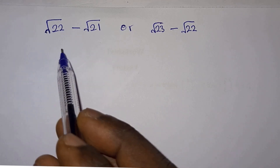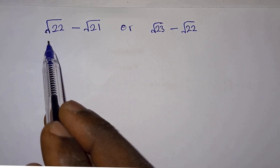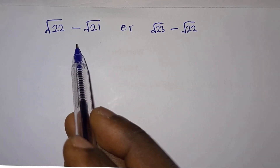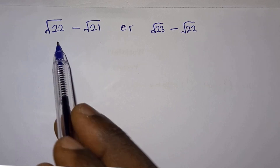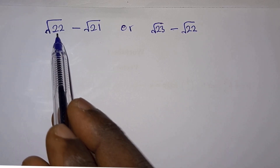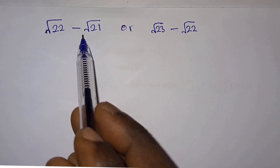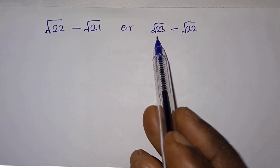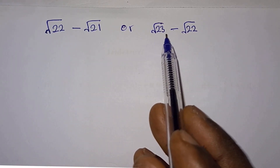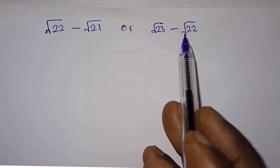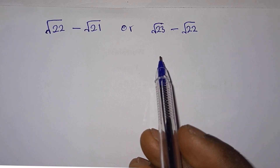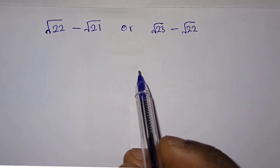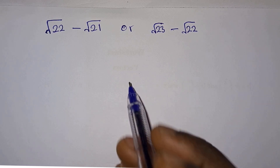Hello, in this video we will compare these two values to see which one is greater. We have √22 minus √21 and √23 minus √22. So which one is bigger? First of all, we will rationalize each of them.